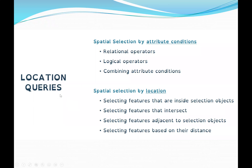With spatial selection by attribute conditions, we can use relational operators, which give us one condition. If we have more than one condition, we can use logical operators: AND, OR, and NOT. AND and OR are binary operators because we need a minimum of two conditions. We can also combine attribute conditions. For spatial selection by location, we can select features that are inside selection objects, that intersect, that are adjacent to selection objects, or features based on their distance.